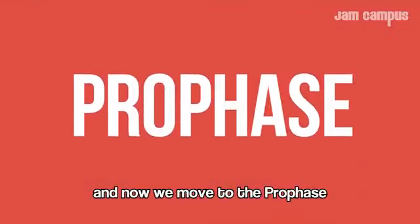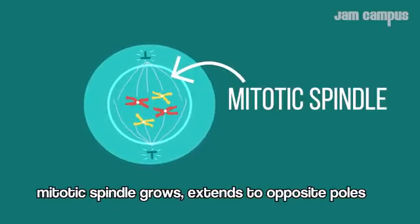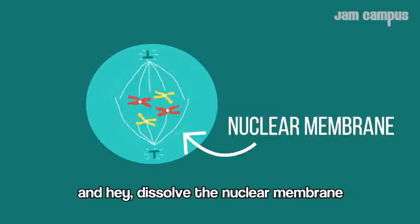Now we move to prophase, where chromosomes condense into X shapes. The mitotic spindle grows and extends to opposite poles, and the nuclear membrane dissolves.